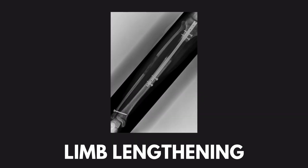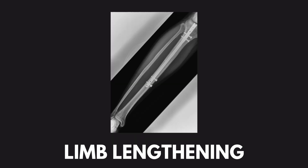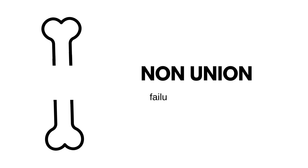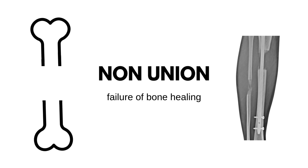Limb lengthening involves the process of making new bone. Nonunion occurs when the bone fails to regenerate properly, leaving a gap or incomplete healing. This is one of the most concerning complications of limb lengthening, as it directly impacts the success of the surgery and the patient's mobility.